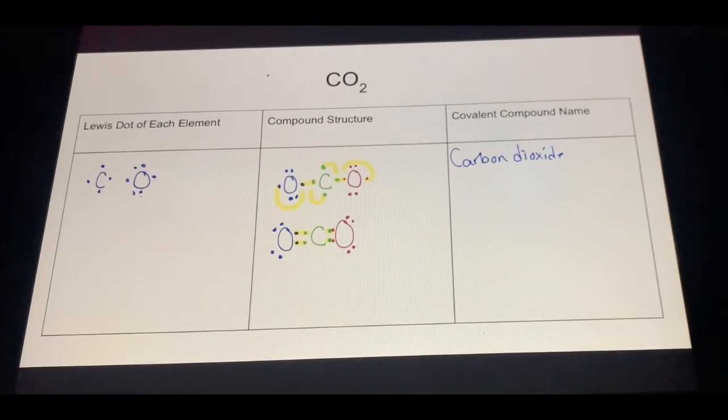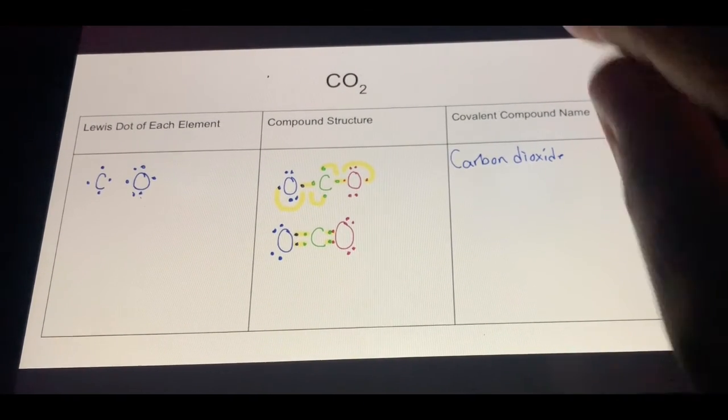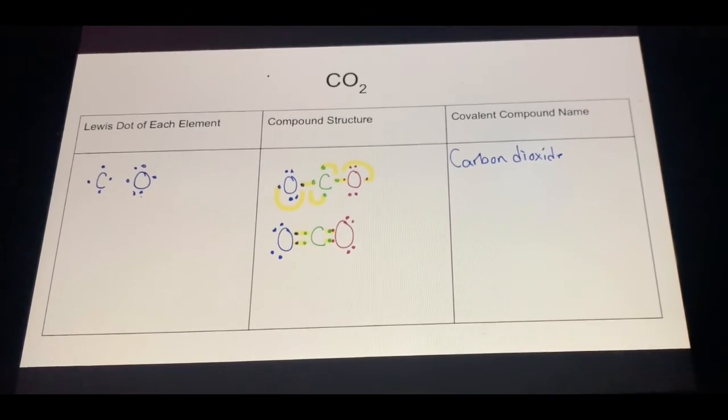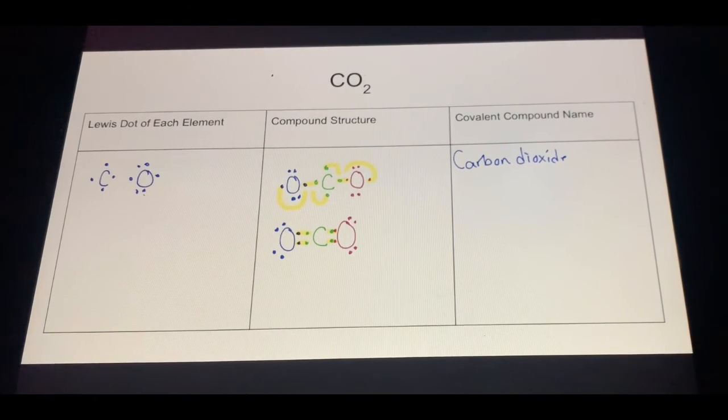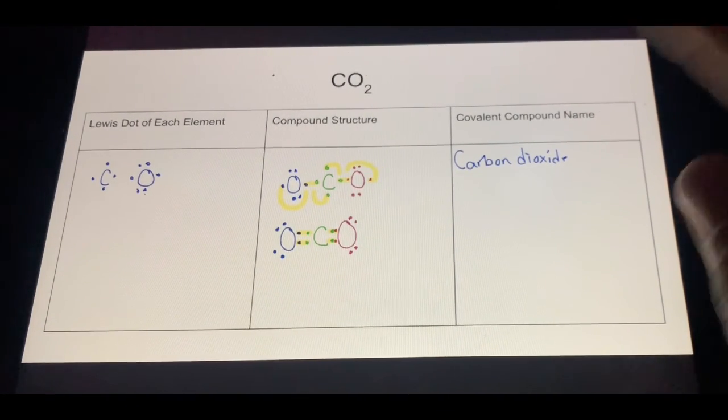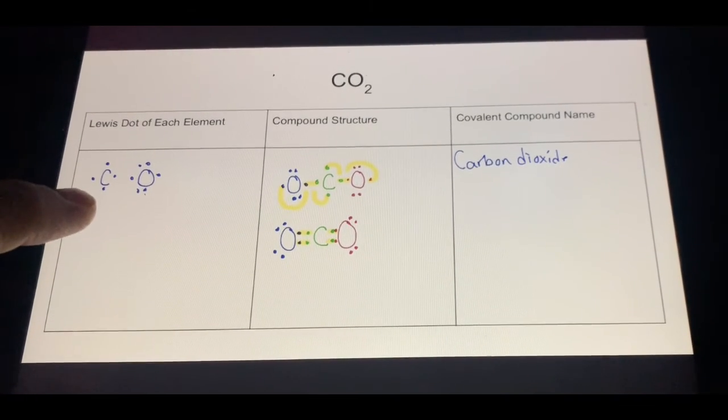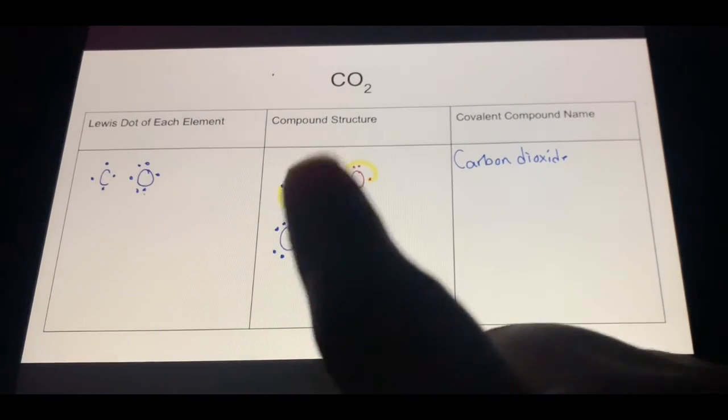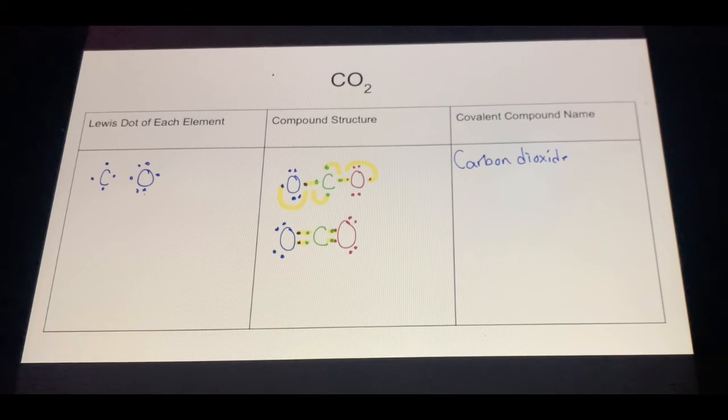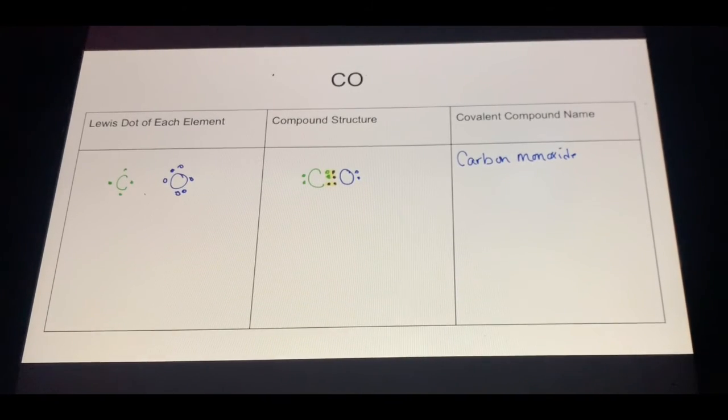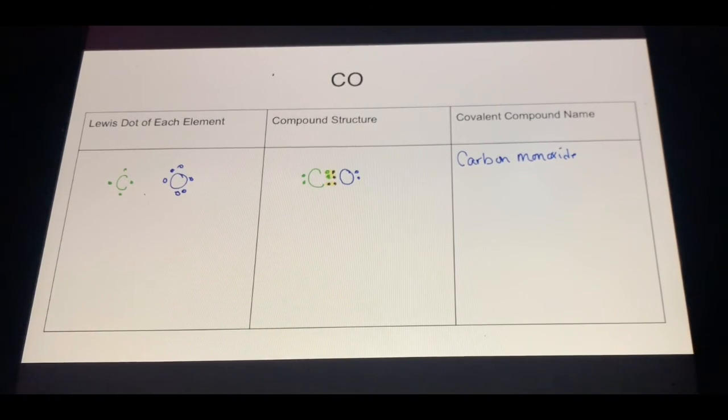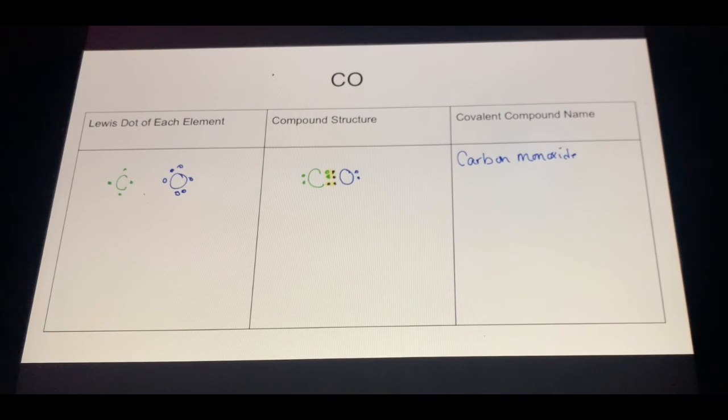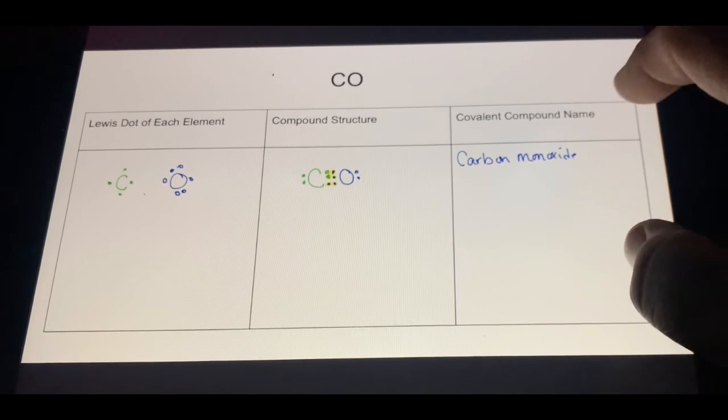Here is carbon dioxide, and you'll notice that we've had to move some electrons around. Your electrons can move, they're going to want to move, they're going to want to make bonds. Don't think that they're fixed in these locations that we drew for the Lewis dot. They're going to move. You notice I end up with double bonds between the carbon and the oxygen. This is carbon dioxide. Here's carbon monoxide, and notice it has triple bonds. It's going to move and make the bonds it needs to.